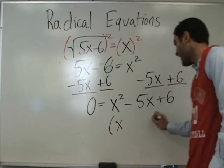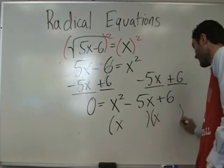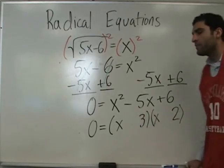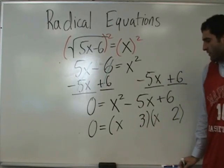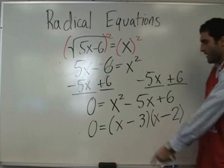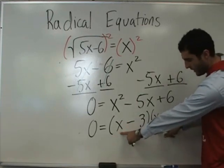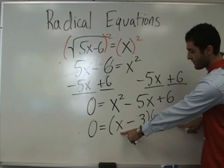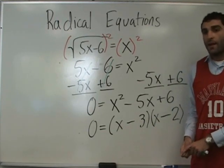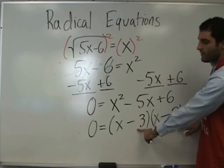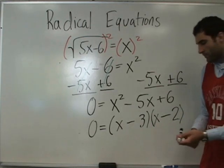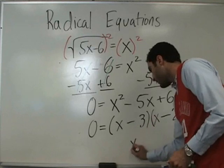After squaring, what's remaining? We get x squared minus 5x plus 6 equals zero. To solve this, we factor. X and x, and 3 and 2, both minus: (x minus 3)(x minus 2). A quick FOIL check: x squared minus 2x minus 3x equals minus 5x, and the last term is plus 6. So our two solutions are x equals 3 and x equals 2.